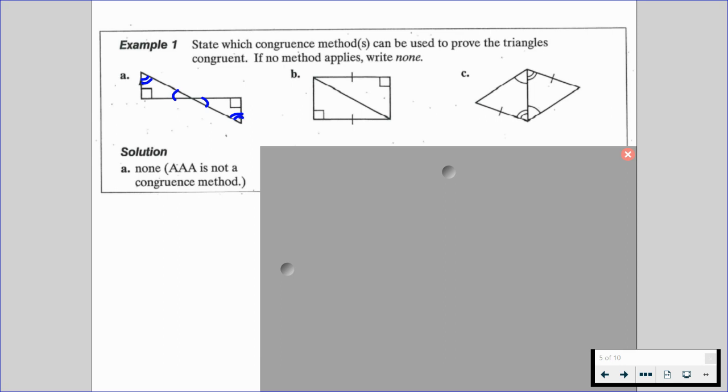For B, we have a reflexive side. If we have that, okay. What else do we have here? Well, we know we have a right angle. And we have a leg of that right triangle as well that's marked. So it's going to be HL.